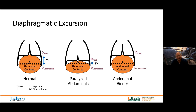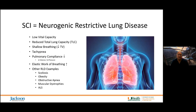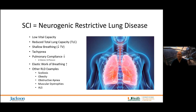I am a strong advocate for the use of abdominal binders — they're absolutely essential to overcome the restrictive lung disease that is neurogenic after a spinal cord injury. Components of restrictive lung disease include low vital capacity, reduced total lung capacity, and shallow breathing — a reduced tidal volume and tachypnea to compensate. Pulmonary compliance is diminished, meaning the elastic work of breathing is increased. Other examples include neurogenic scoliosis, obesity, obstructive apnea, muscular dystrophies, and amyotrophic lateral sclerosis.